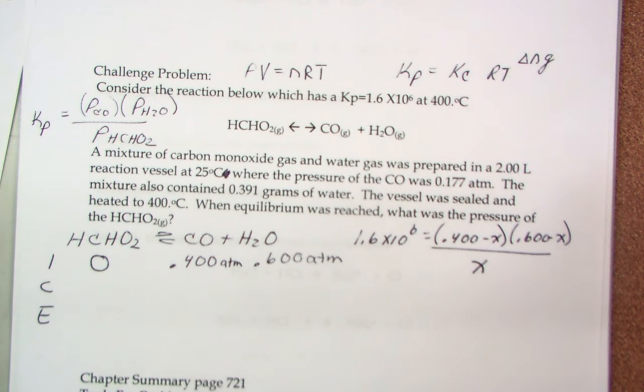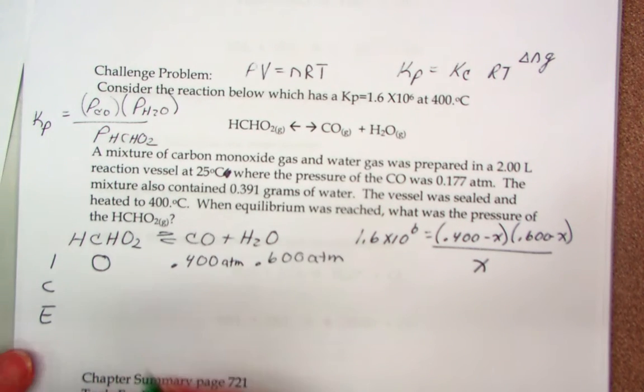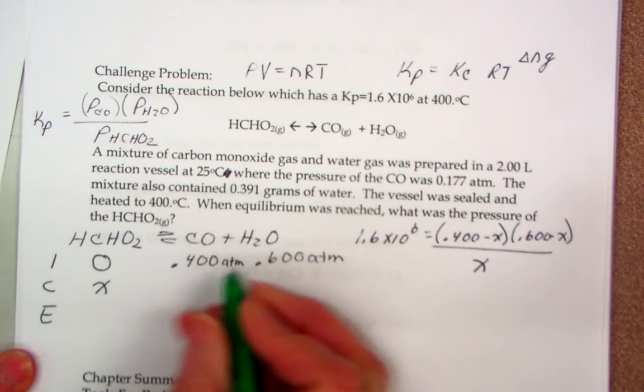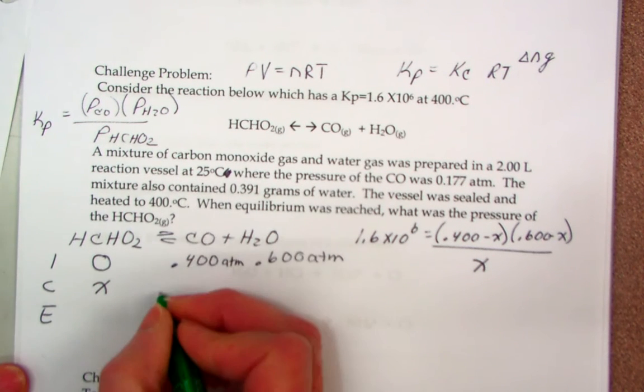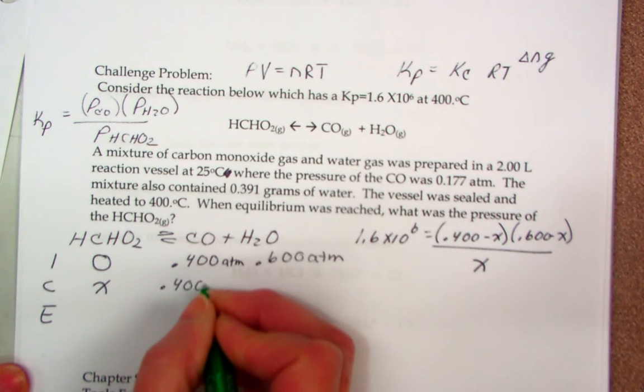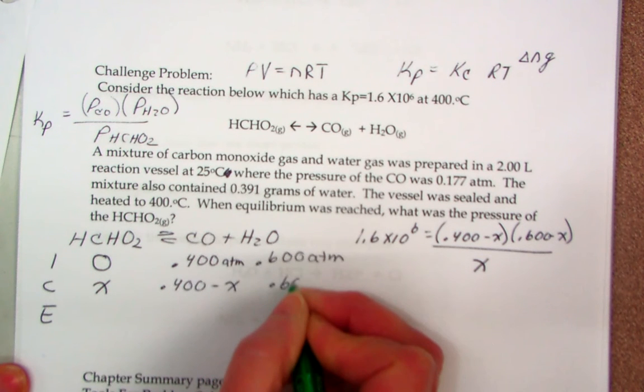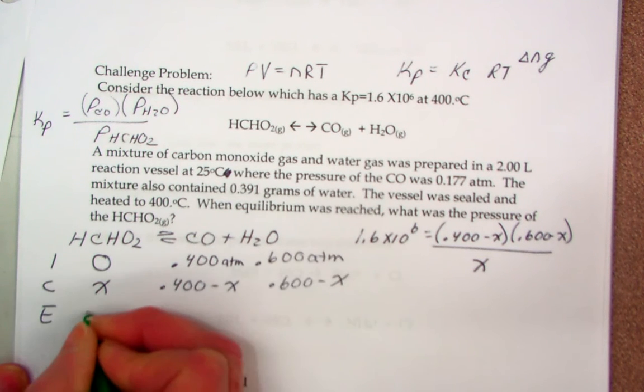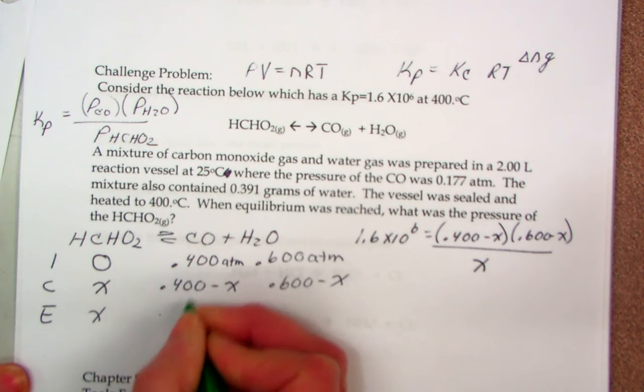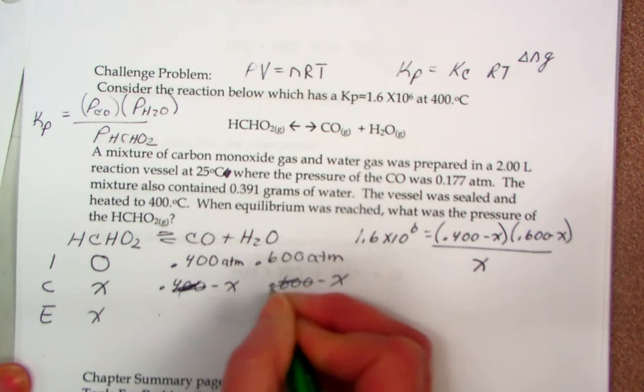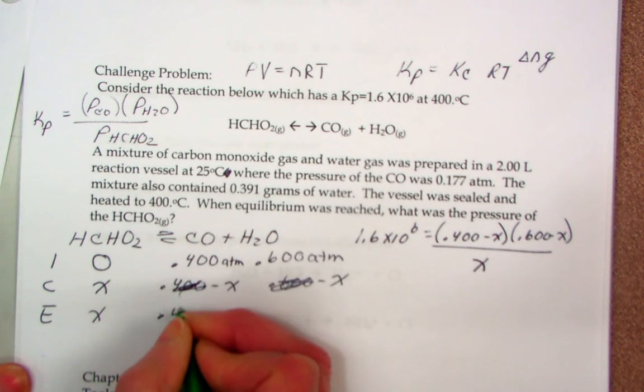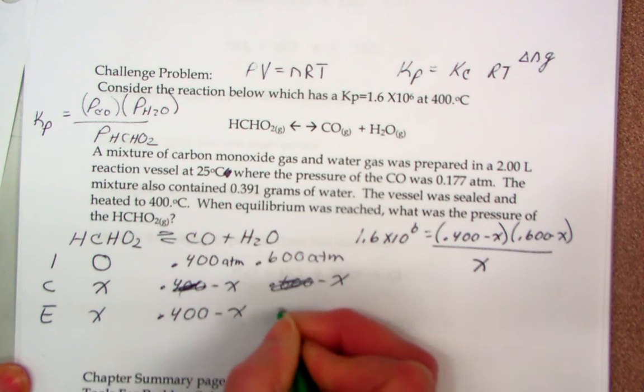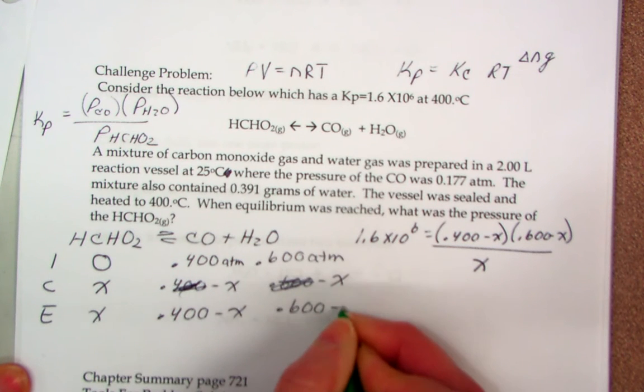Now, I want you to think for a minute about why I can subtract x. When you filled in your chart, you said this will be positive x because this has to go backwards. So this is 0.4 minus x, 0.6 minus x. So at equilibrium, we have minus x. So we get 0.4 minus x at equilibrium and 0.6 minus x.